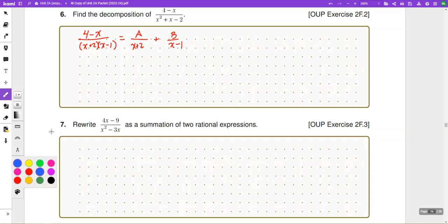Multiply both sides by the common denominator is going to lead to a times x minus 1 plus b times x plus 2. And that's going to need to equal 4 minus x.